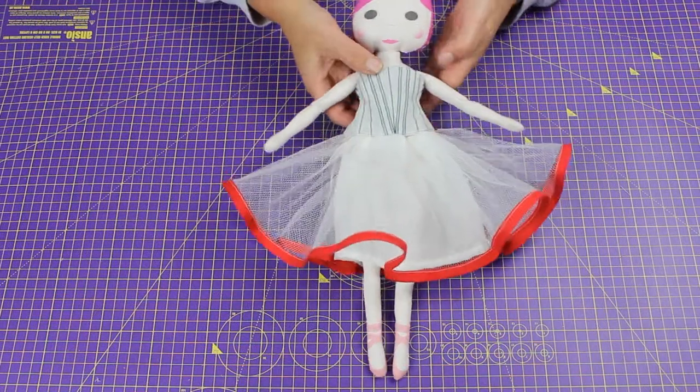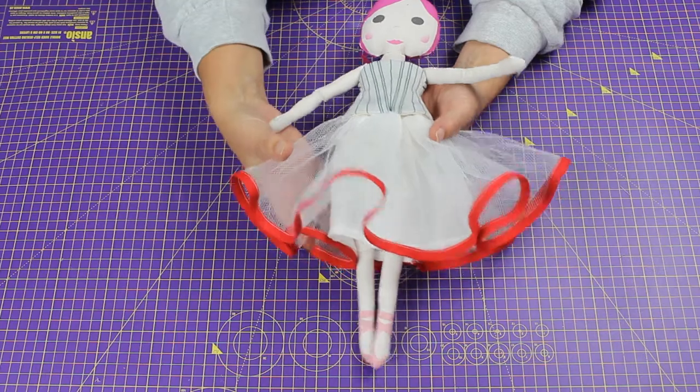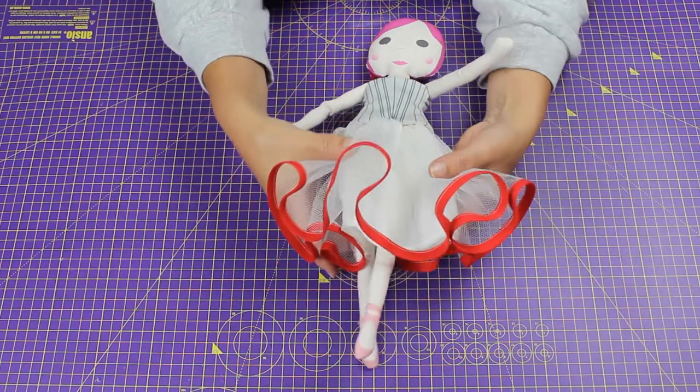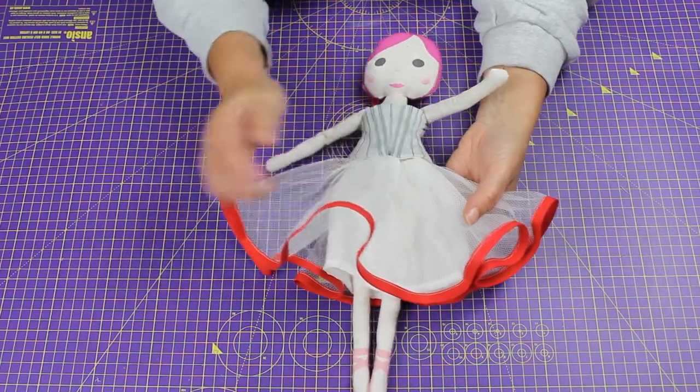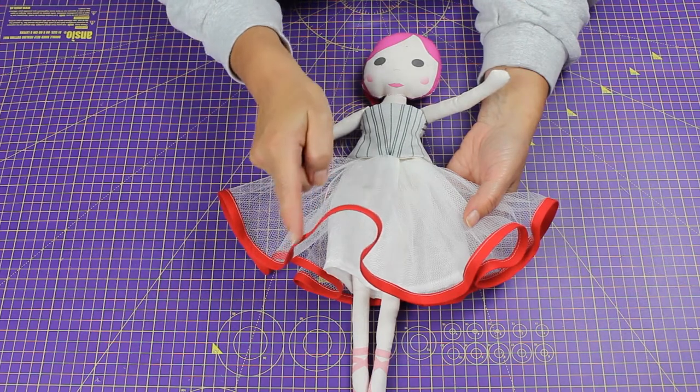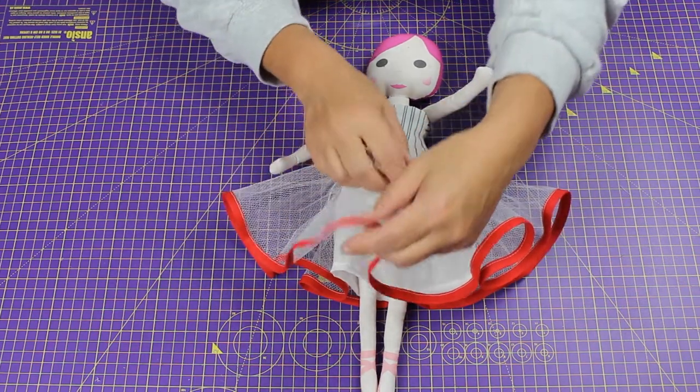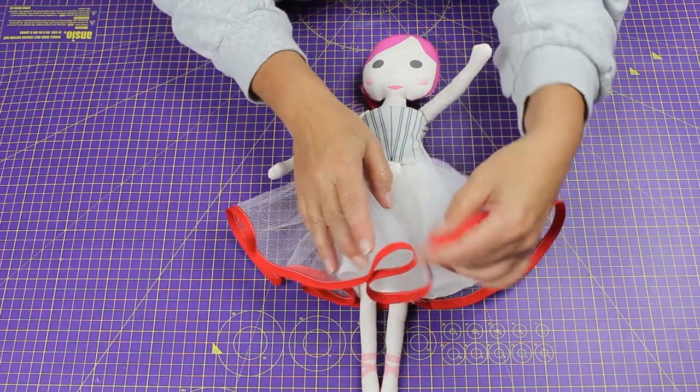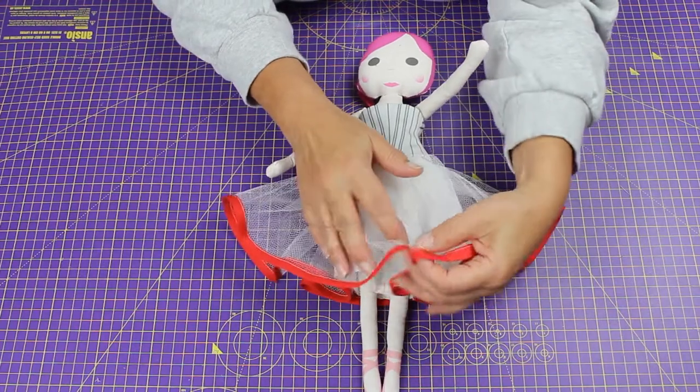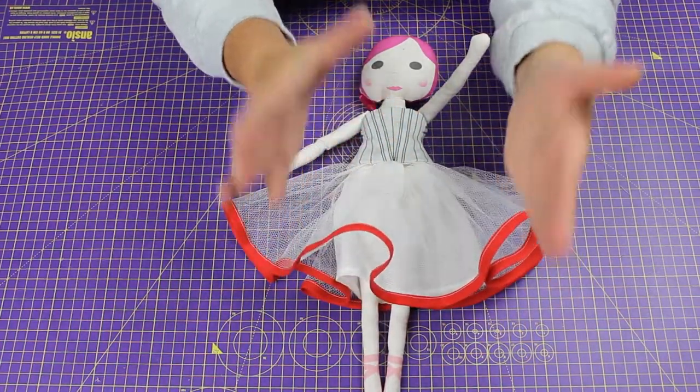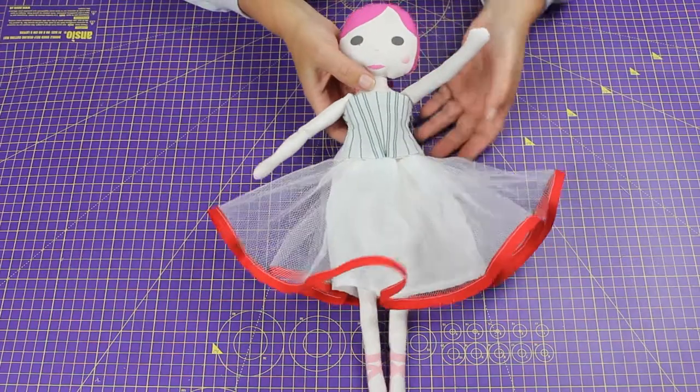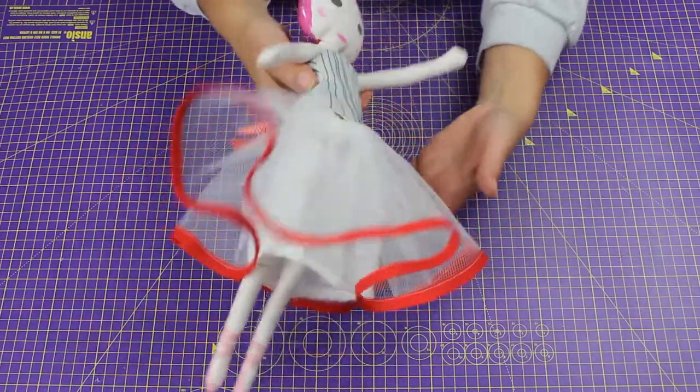I couldn't resist adding the bias binding to the hem. This is cotton bias and quite stiff, so note that if you use satin bias, it would be a lot softer and would drape more. I just wanted you to see the effect and how beautiful it is.